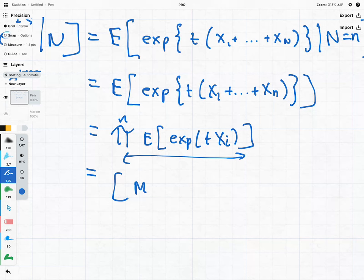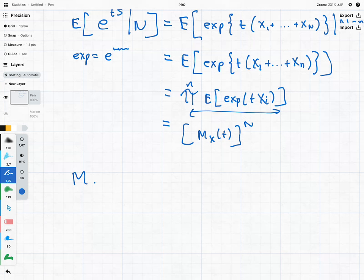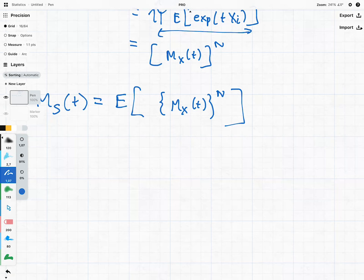So we have Mx of t times n amount of times, which means if we come back to our Ms of t, we are going to get the following, the expectations of this Mx of t. And we have to do this because remember, n is a random variable, we can't just leave it there because we don't know what it is. So we have to take the expectation of it.